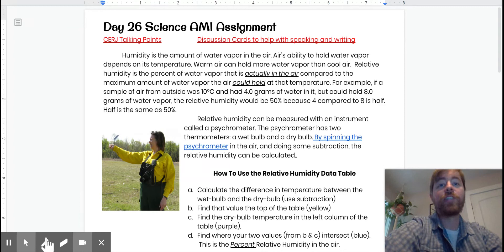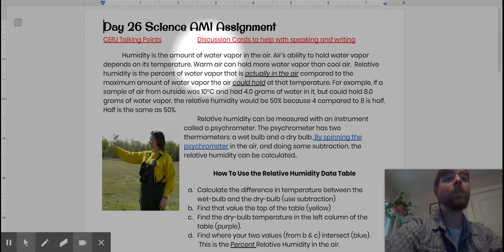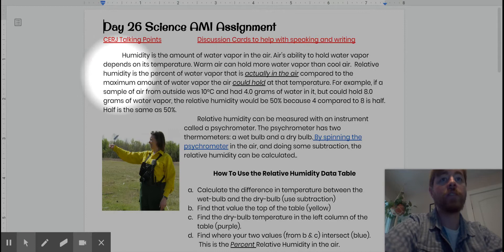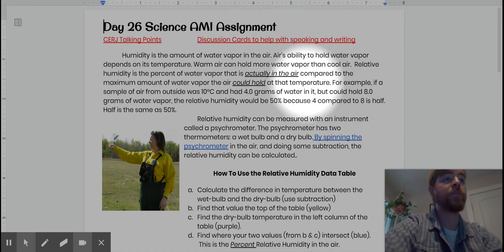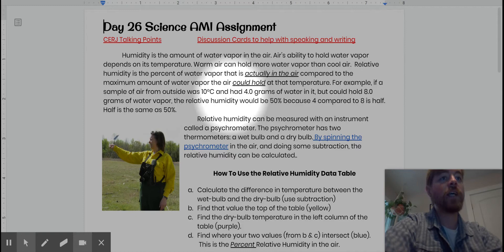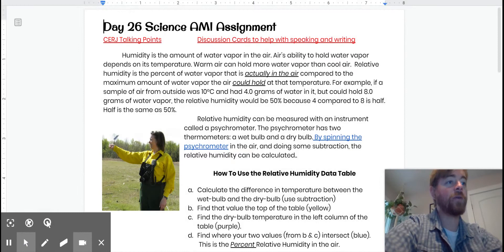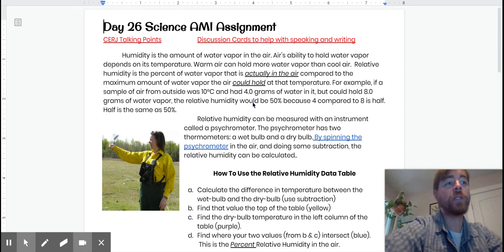Humidity is the amount of water vapor in the air. Air's ability to hold water vapor depends on its temperature. Warm air can hold more water vapor than cool air. Relative humidity is the percent of water vapor that is actually in the air compared to the maximum amount of water vapor the air could hold at that temperature. For example, if a sample of air from outside was 10 degrees Celsius and had four grams of water vapor in it but could hold eight grams of water vapor, then the relative humidity would be 50% because four compared to eight is half.